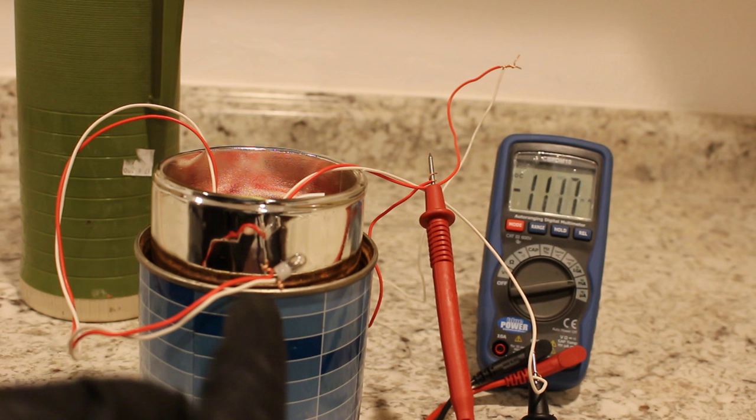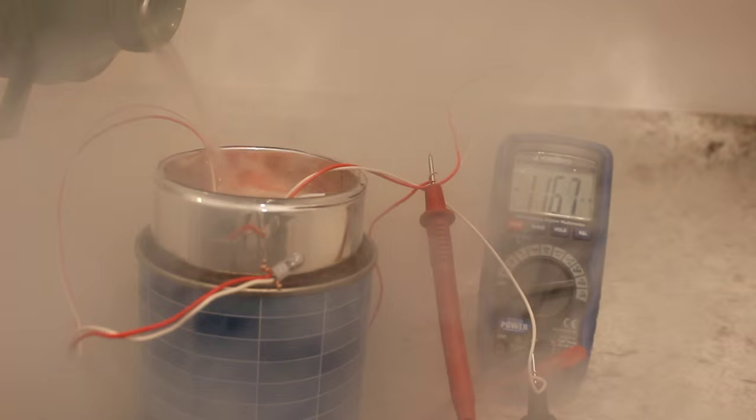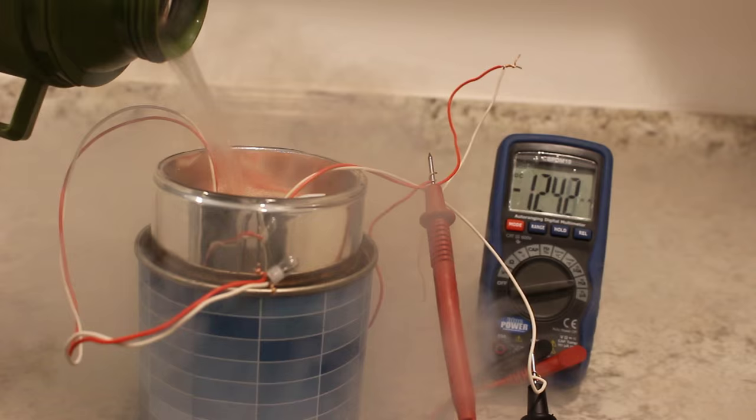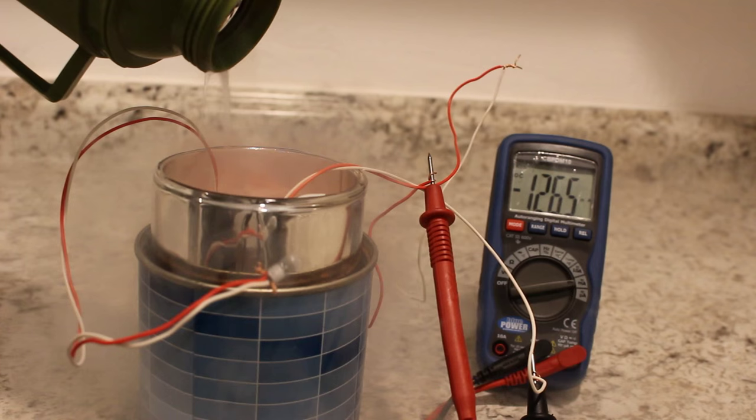So let's put this inside this dewar flask. All right, there we go, it's all hooked up. Let's add the nitrogen and see what happens. I can see the amperage is already increasing. It's up to 126 now.